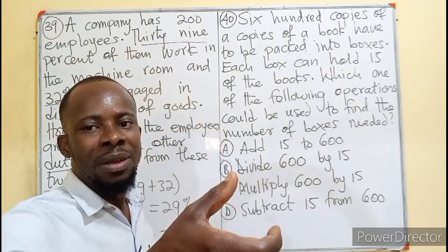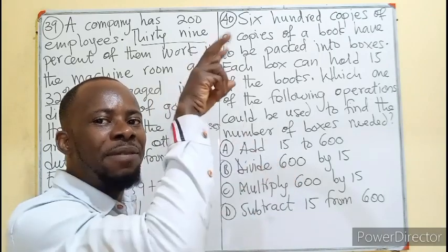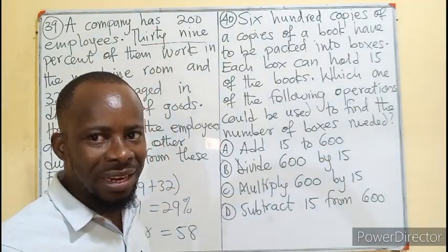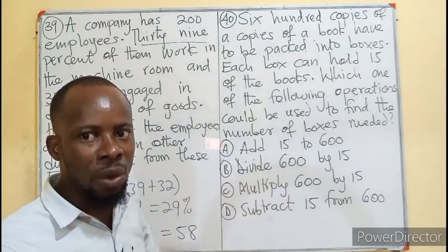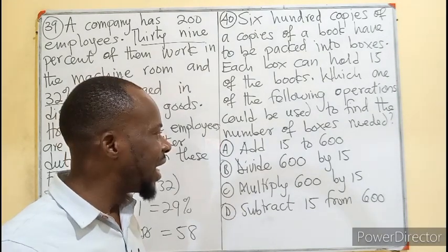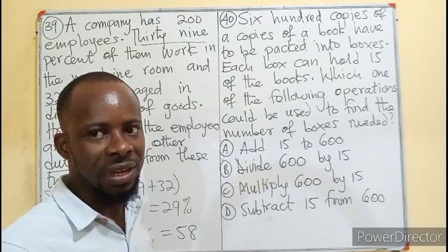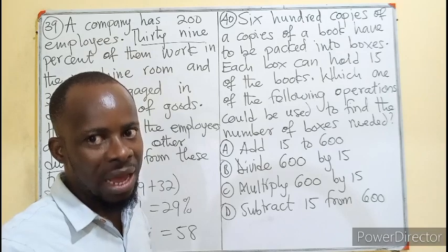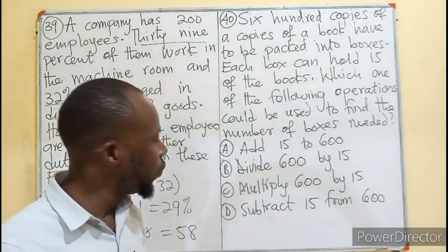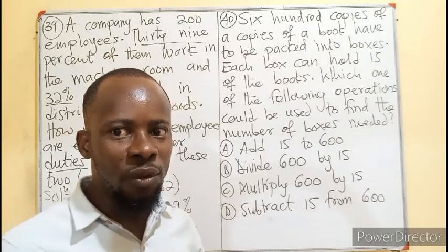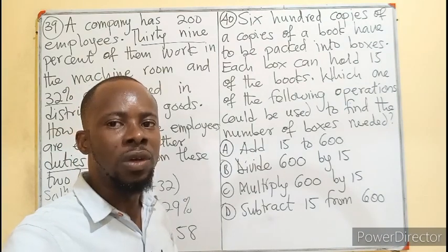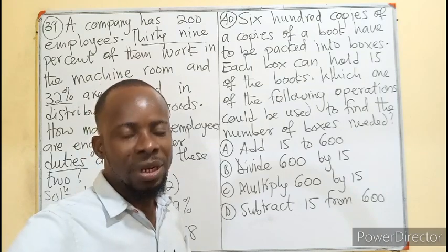If you divide and get 40, that means 15 times 40 gives you your 600 copies. Adding 15 to 600 would only increase the copies — it won't give you the number of boxes. Dividing 600 by 15 gives you the number of boxes required. Multiplying would increase copies, and subtracting definitely won't give you the number of boxes either. The operation needed here is division: divide 600 by 15 to find the number of boxes required.